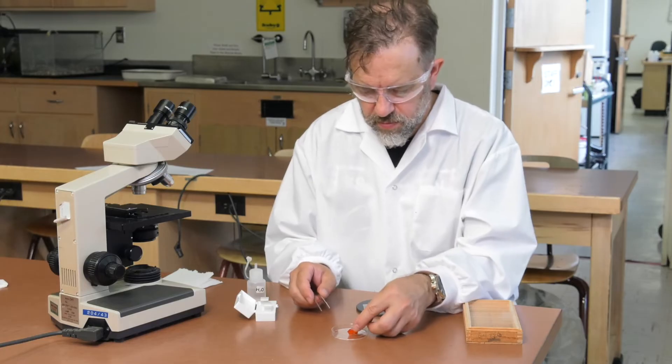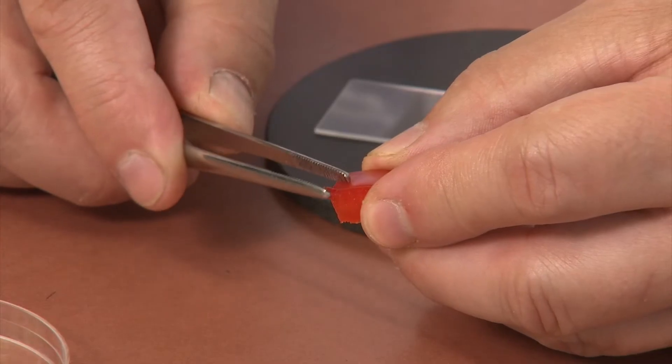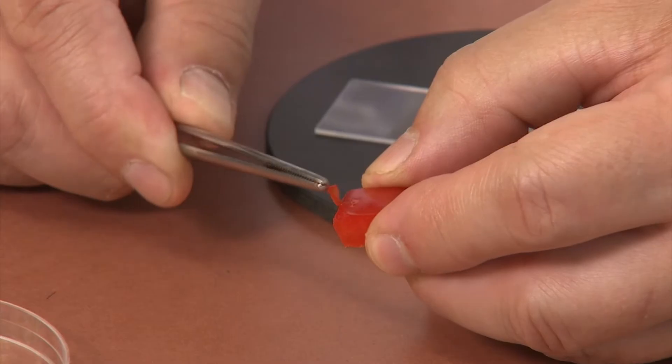Pick up a piece of red pepper and use the fine forceps to peel the skin from the outer surface of the pepper.